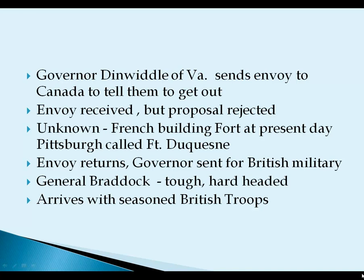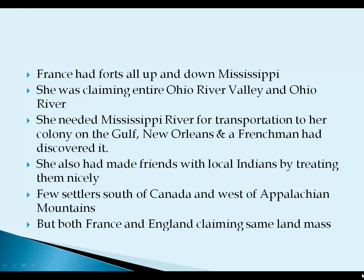The governor then requested experienced General Braddock from Britain — a tough, hard-headed, experienced general who arrived with seasoned British troops. The French had troops positioned up and down the Mississippi for transportation to New Orleans and throughout the Ohio River Valley, and they befriended the local Indians by treating them well. The French settlers were few — countable in the hundreds south of Canada and west of the Appalachians — but both France and England were claiming the same territory.